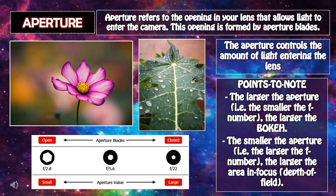Aperture. Aperture refers to the opening in your lens that allows light to enter the camera. This opening is formed by aperture blades. The aperture controls the amount of light entering the lens.